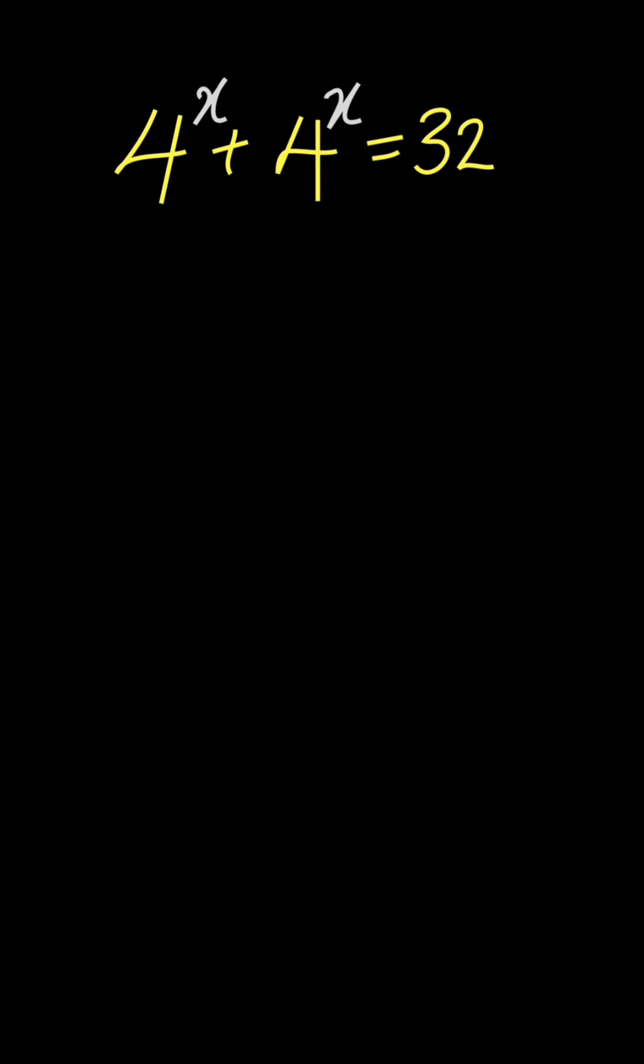Hi everyone, this is Northern Line Math and in this lesson we are going to solve this problem before us. We have 4 power x plus 4 power x is equal to 32.